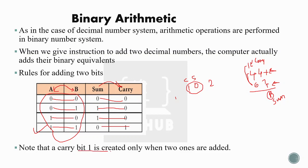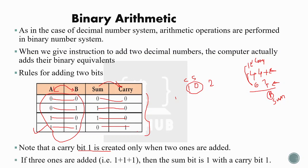Note that the carry bit 1 is created only when two 1s are added. If we are adding three 1s, the sum is equal to 1 and carry is 1. When adding three 1s, the result in binary is 11 — meaning sum is 1 and carry is 1. Now here are the general rules for binary addition. We will add examples to this.